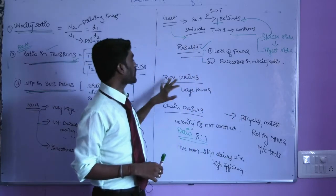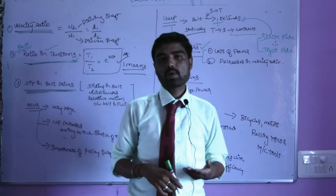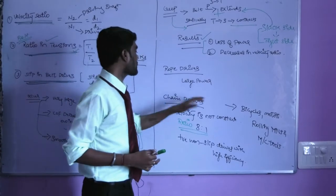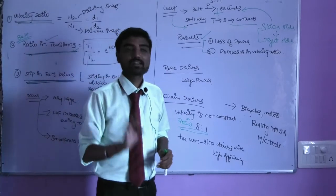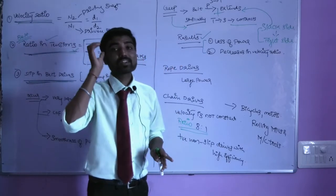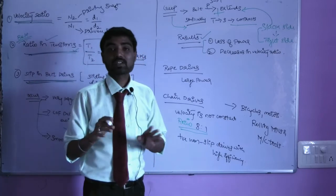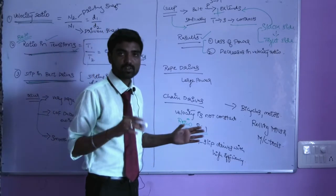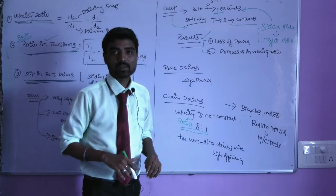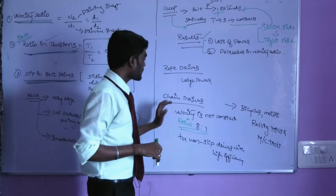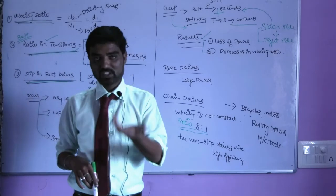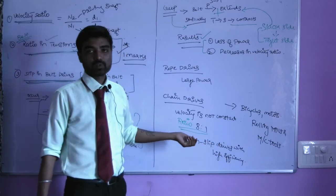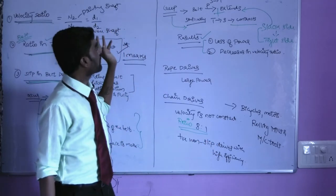Rope drives are used to transmit larger power. Next are chain drives, which compared to belt drives and rope drives have a constant velocity ratio. However, chain drives have velocity fluctuations, with a standard ratio of 8 to 1. Chain drives are positive non-slip drives with high efficiency, used in bicycles, motors, rolling wheels, and machines. These are all some topics of basic theory of machines.